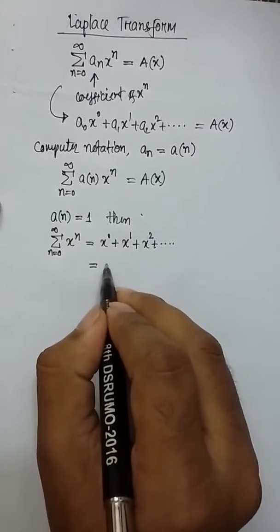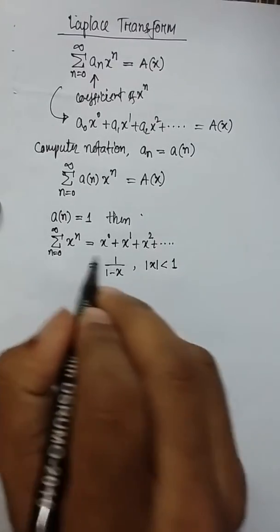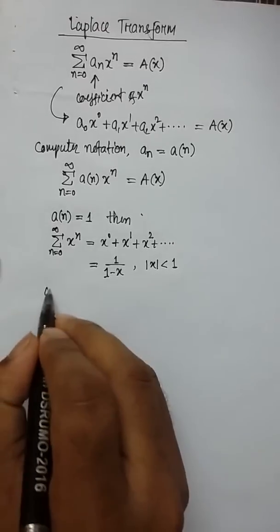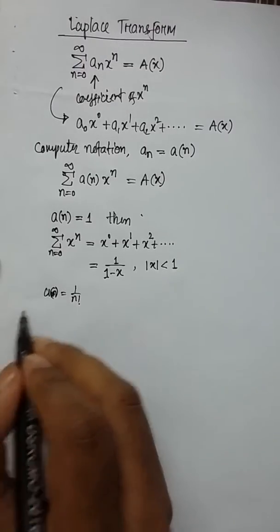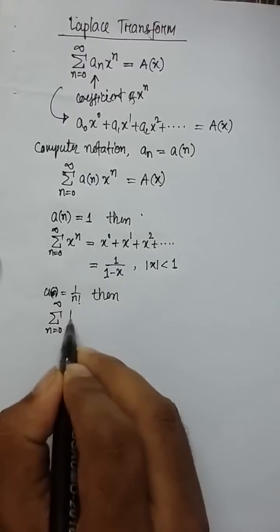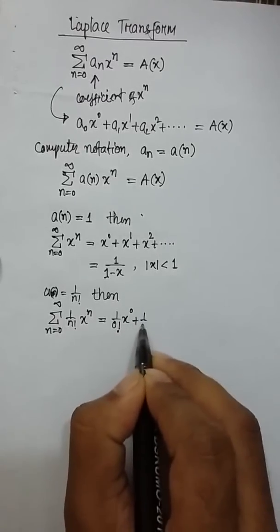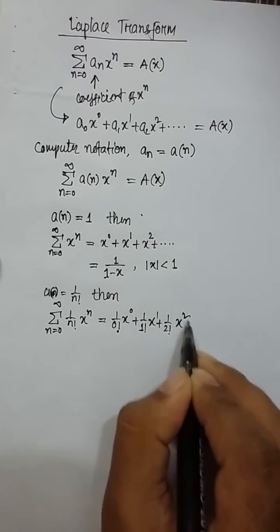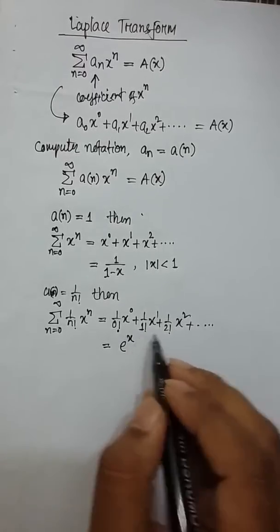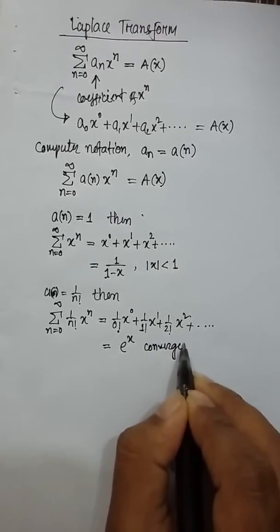For example, if we take a(n) equals 1, our series becomes summation of x to the power n from n equals 0 to infinity, which is an infinite geometric series whose sum is 1/(1-x), but the condition is that the absolute value of x must be less than 1 for convergence. If we take a(n) equals 1/n!, our series becomes the Maclaurin series of e to the power x, which converges for all values of x.